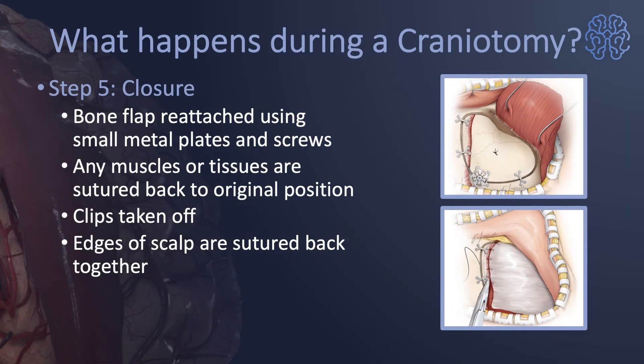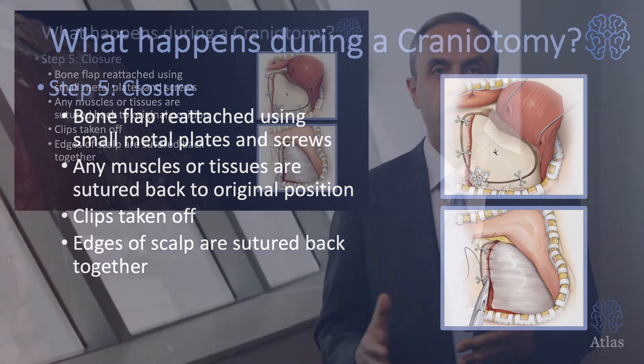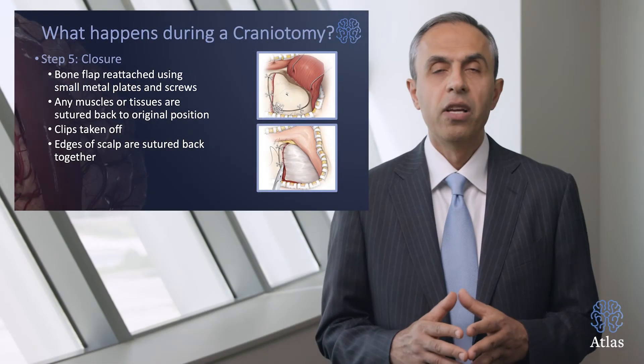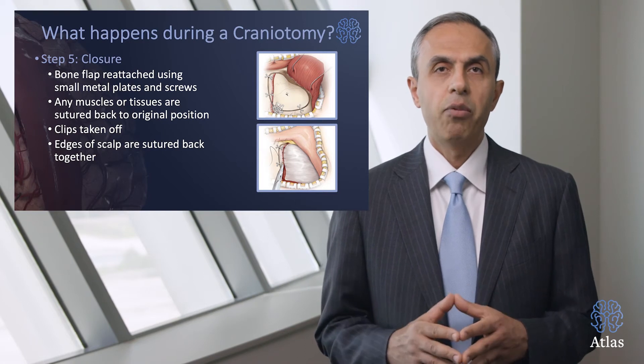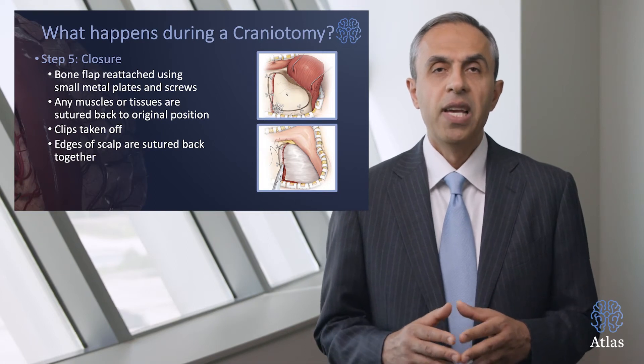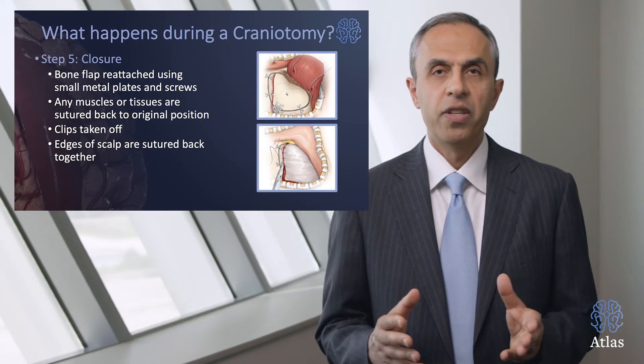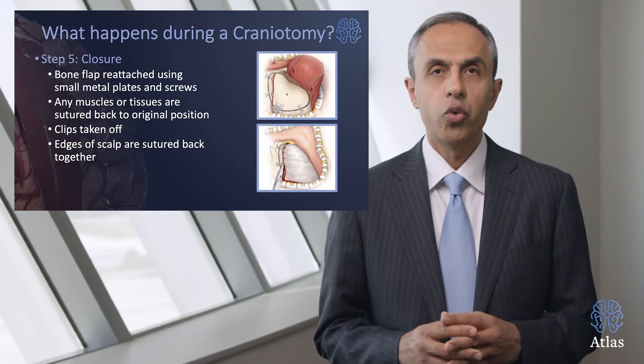The last step is step five — the closure. After the procedure is completed, the bone flap is reattached using small metal plates and screws. Any muscle or other tissues are sutured back to the original position. The clips from the scalp are taken off, and the edges of the scalp are sutured back.